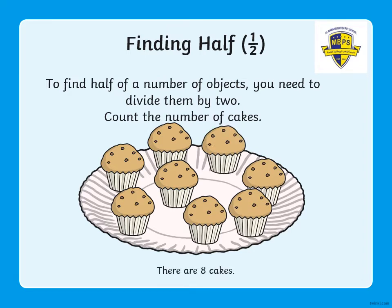Now let's start with today's lesson. What do you find here on the slide? Yes, you can see there are cakes. Come on, count and tell me how many cakes are there on the plate. Yes, there are eight cakes. Now we have to find half of eight. To find half of a number of objects, you need to divide by two. So first we count the cakes and then divide by two. I'll give you time — what is eight divided by two?